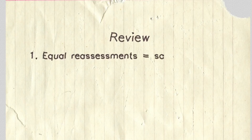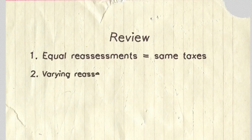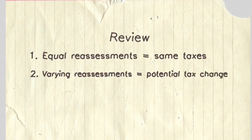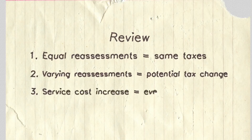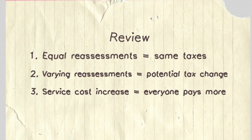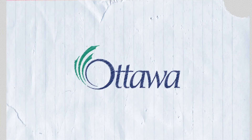Let's review. 1. Property taxes are based on the value of a home. When homes are reassessed equally, each homeowner will pay the same amount proportionately as before. 2. When homes are reassessed at different values, each homeowner will pay a different amount proportionately based on how much their home increased in value. 3. When the town's cost to provide services increases, then everyone pays their share proportionately across the board. And that explains the relationship between property value and property taxes.